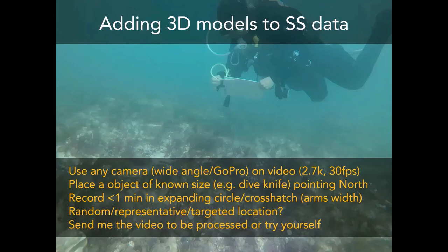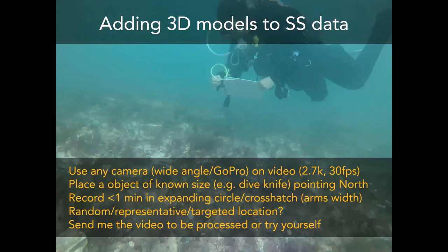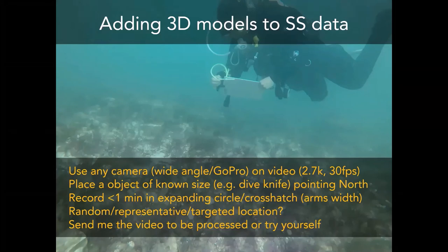I spent just over a minute recording the area on video. I tried two methods: one was a circle getting bigger and bigger with the knife in the center, or a crosshatch — going up and down — attempting to scan a two-meter square area. Two meters works well because you can use arm's width, which is a great Sea Search way of doing things: go in a line, then go an arm's width to the right and go in another line. Those are the 3D models I put in the chat window, produced using this method.